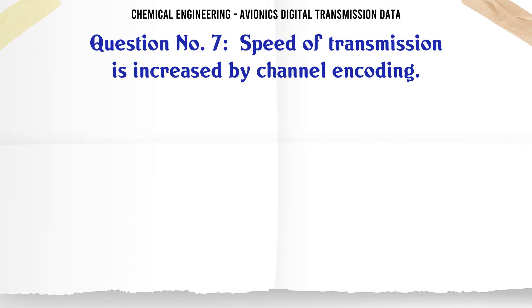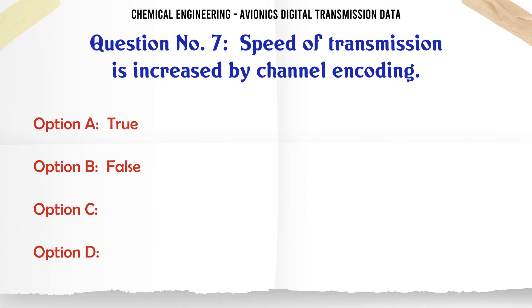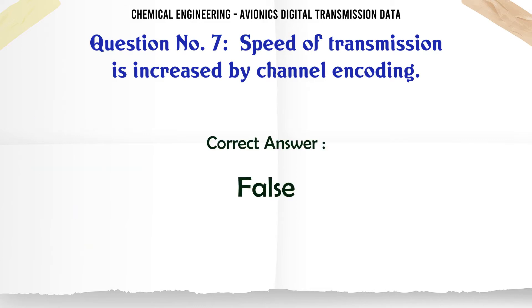Speed of transmission is increased by channel encoding. A: True. B: False. The correct answer is False.